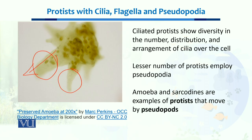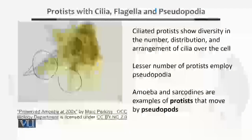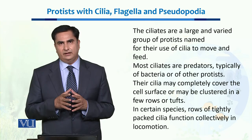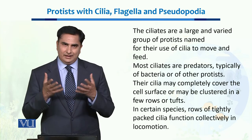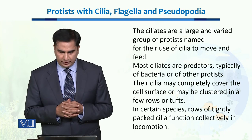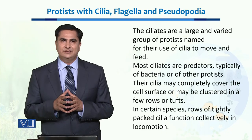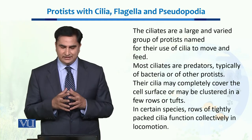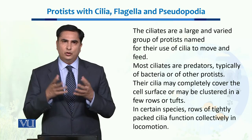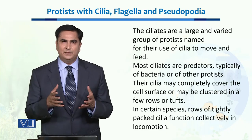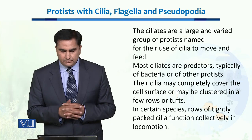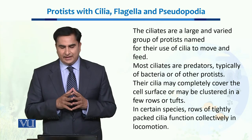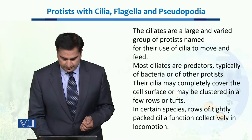When we talk about ciliated protists, they show diversity in numbers, distribution, and arrangement of the cilia all over their body. Ciliates are one of the largest and most varied groups of protists, named because of their use of cilia for locomotion. Most ciliates are predators — they prey on different organisms to capture and eat them as their food source. Their cilia cover their whole body, helping in quicker locomotion. In certain species, rows of tightly packed cilia function collectively in locomotion.